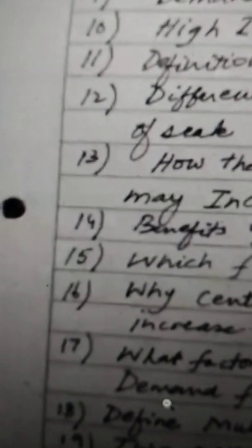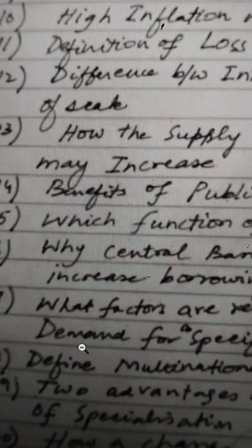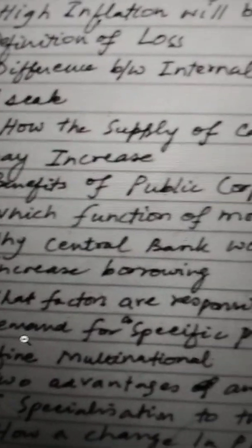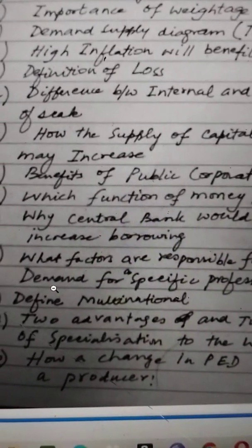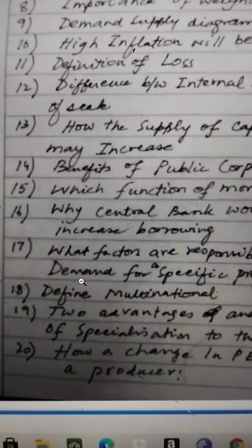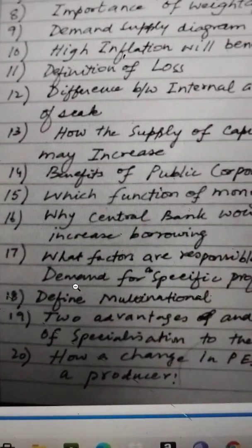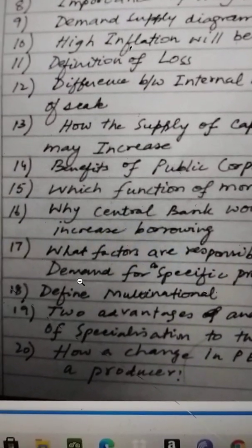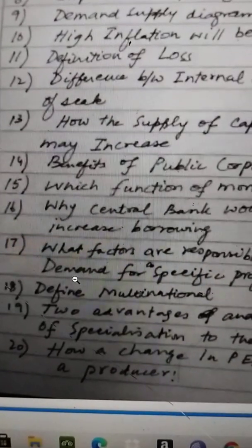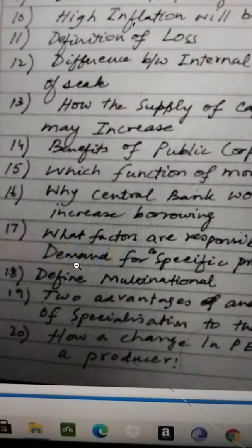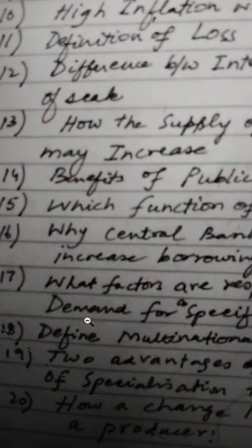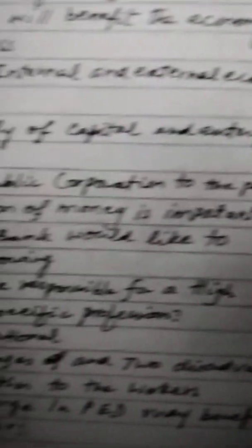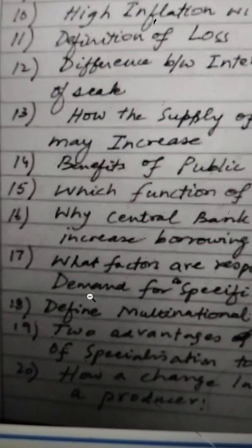Question number 16: why would a central bank like to increase borrowing? The central bank will try to increase borrowing through an expansionary monetary policy. The advantages of expansionary monetary policy are the reasons: they want more economic activity, aggregate demand may increase, people will have more money, they can invest in and expand their businesses, and they can have a better living standard by availing credit facilities.